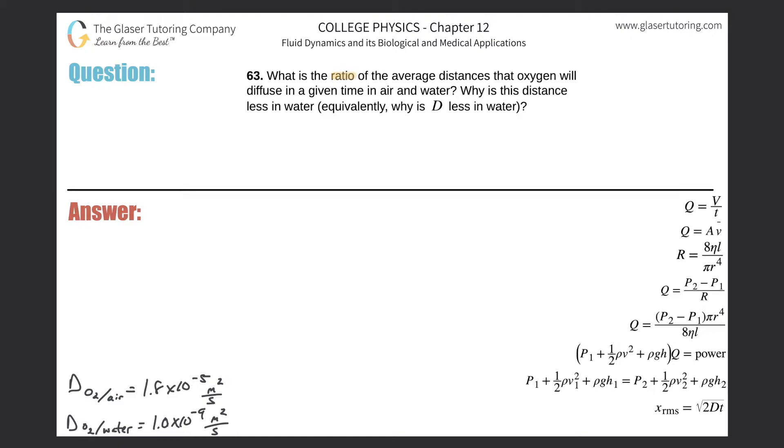Number 63: What is the ratio of the average distances that oxygen will diffuse in a given time in air and water? Why is this distance less in water? Equivalently, why is D, which is known as the diffusion constant, less in water?